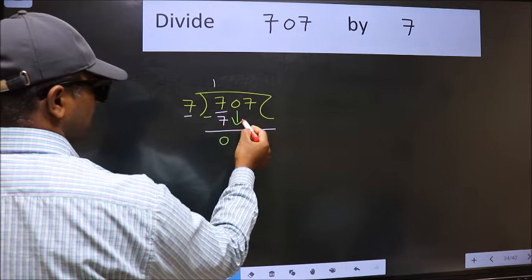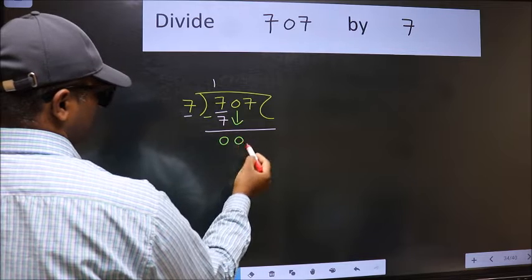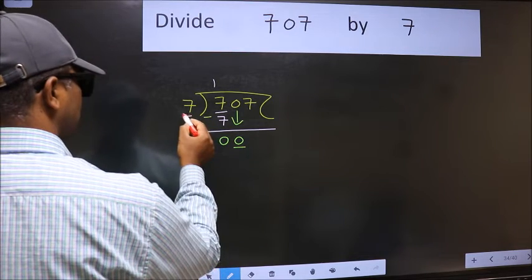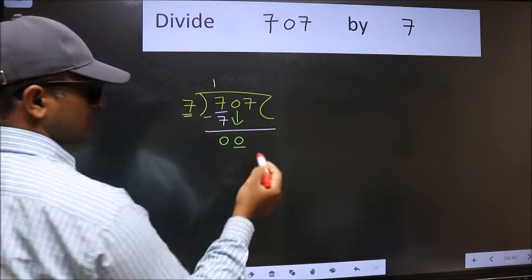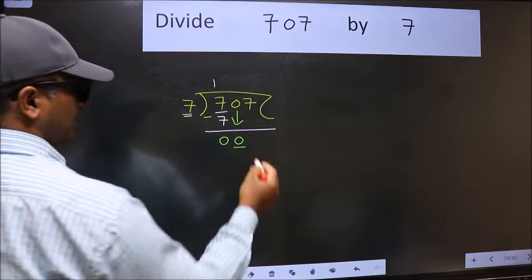After this, bring down the beside number. So 0 down. Now here we have 0 and here 7. 0 is smaller than 7, so we should bring down the second number.